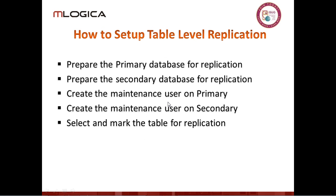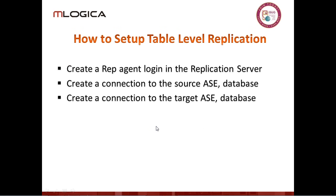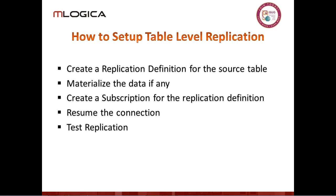Setting up table-level replication involves several steps: prepare the primary database and the secondary for replication, create the maintenance users, mark the individual tables for replication, create the rep page and login, create the connections to the source and the target, create the rep defs, materialize the data if there is any — you may have an empty table or data left over from a warm standby — create the subscription, then resume the connection and go ahead and test.